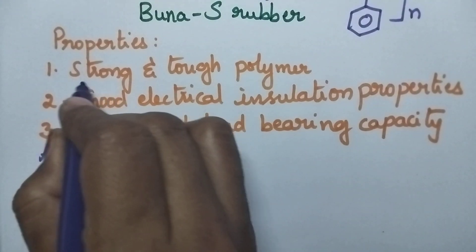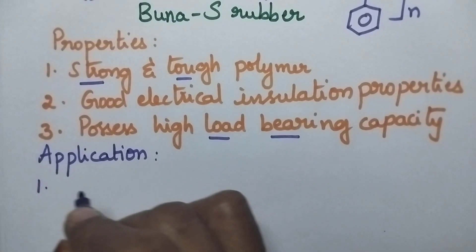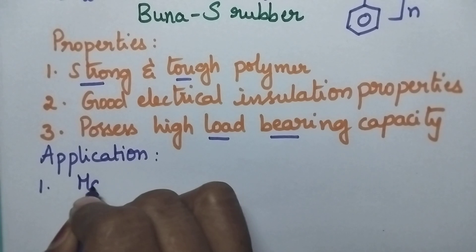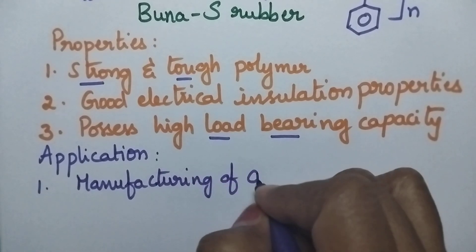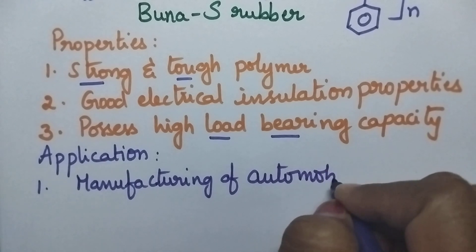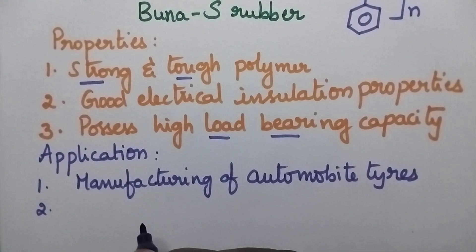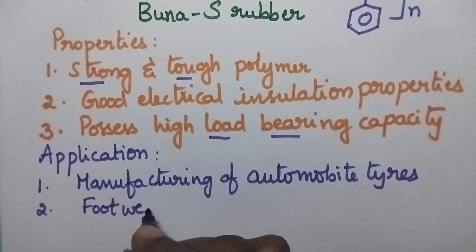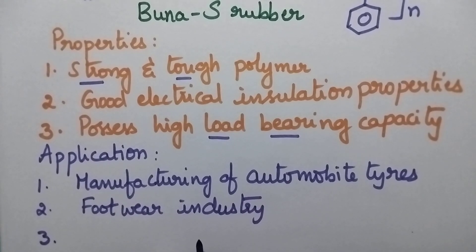Because of its strong, tough nature and high load bearing capacity, Buna S rubber is used for the manufacturing of automobile tires. It is also highly used in the footwear industry, and it is used for the manufacturing of gaskets.